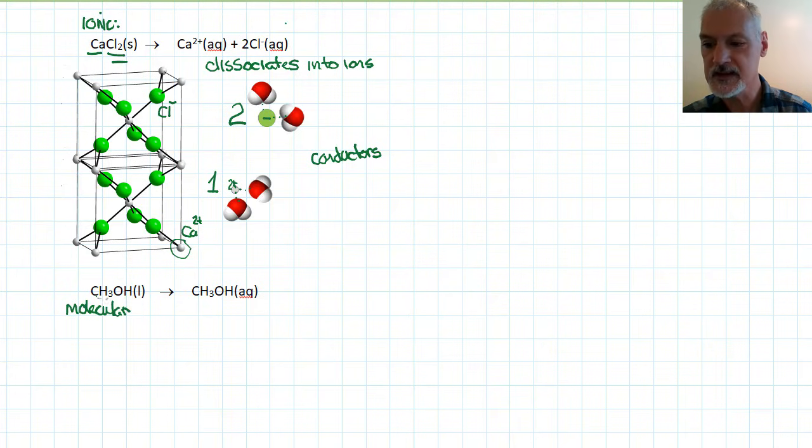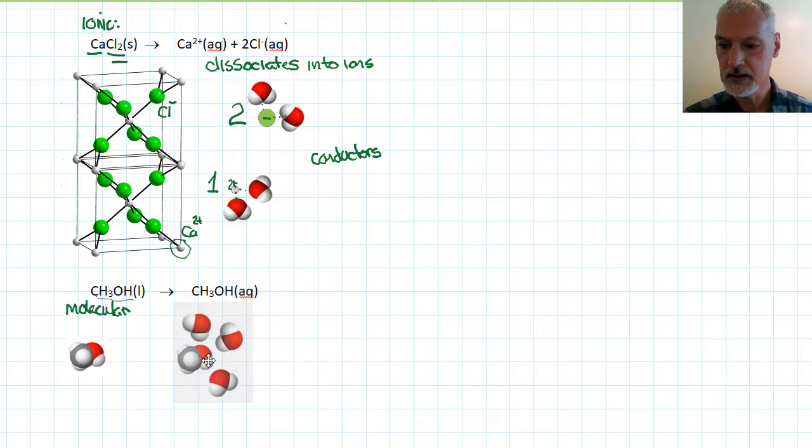So when we take a substance such as that and place it into water, we start off with this chemical - it's called methanol. When we dissolve it, the water molecules surround it and make some sort of weak interactions and weak bonds with the methanol itself.